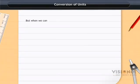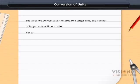But when we convert a unit of area to a larger unit, the number of larger units will be smaller. For example, 1,000 cm² = 1,000 ÷ 10,000 m² = 0.1 m².